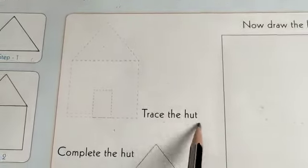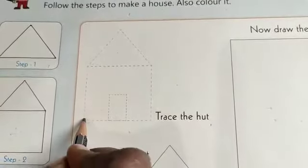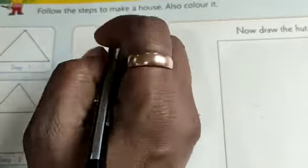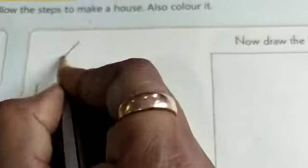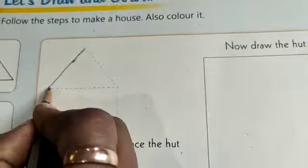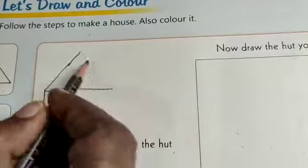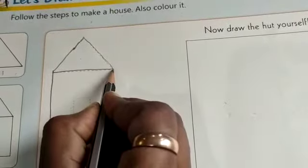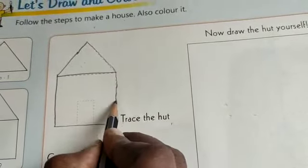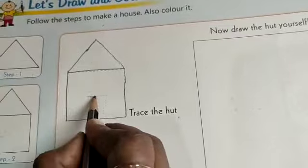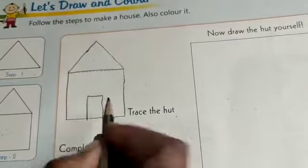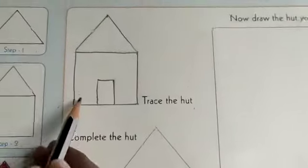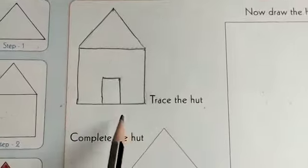First trace the hut. Take a pencil and trace this dotted lines children. Trace the dots. Dotted lines neatly. Now small rectangle. See children we have traced the dots of the hut.